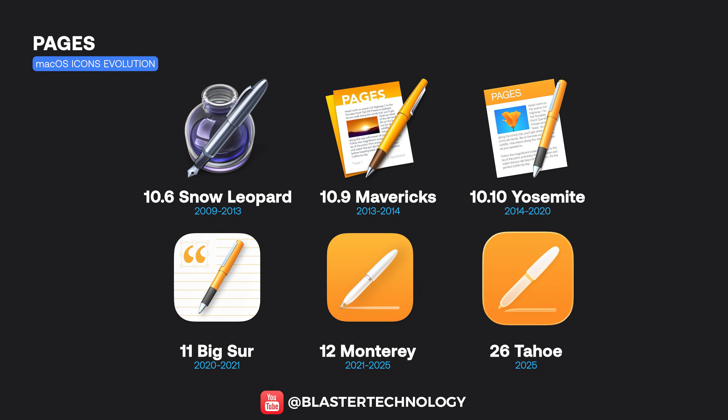The Pages icon has had an interesting evolution, from the ink pen to increasingly simple pages. Starting with the Monterey version, Apple kept just the pen on an orange background.